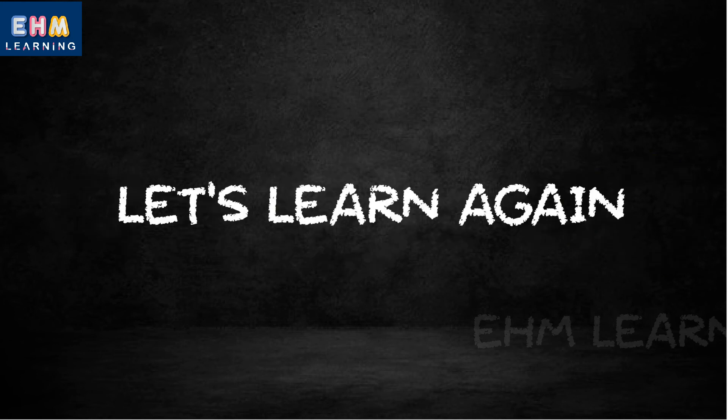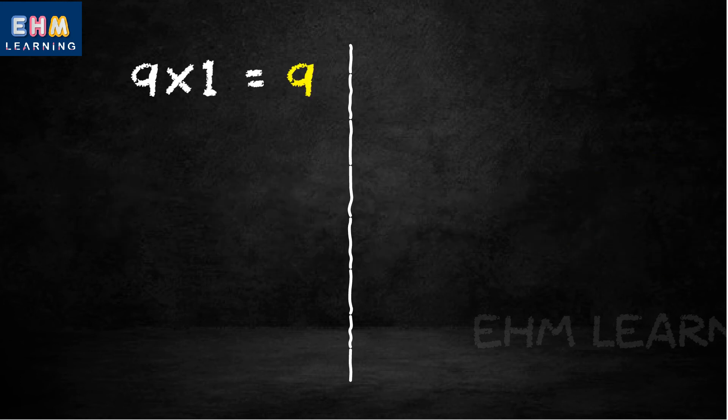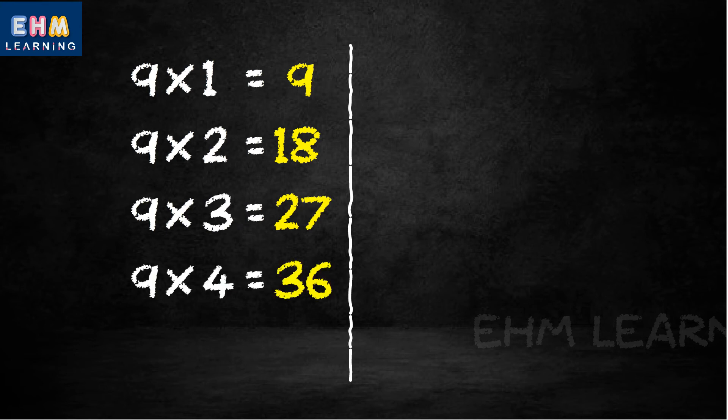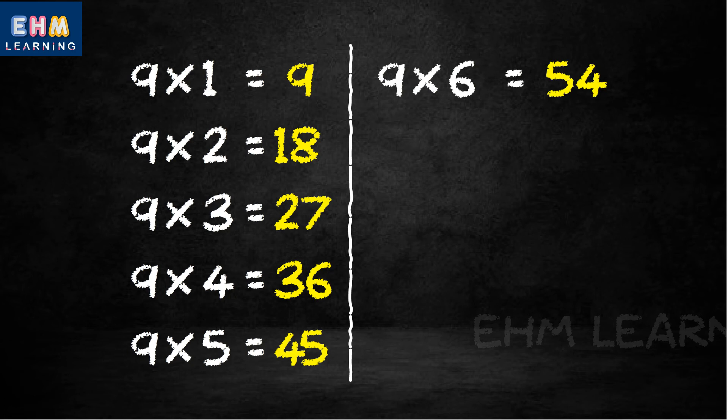Let's learn again. 9 1s are 9, 9 2s are 18, 9 3s are 27, 9 4s are 36, 9 5s are 45, 9 6s are 54.